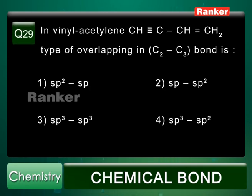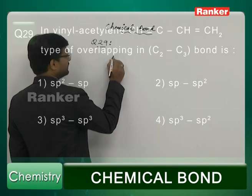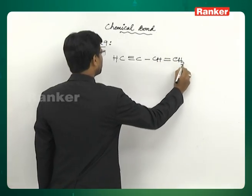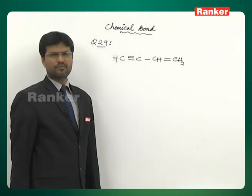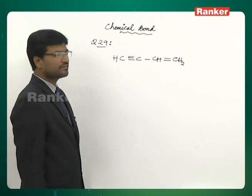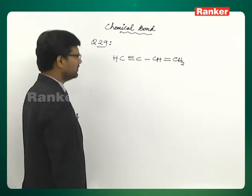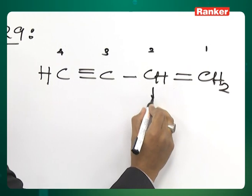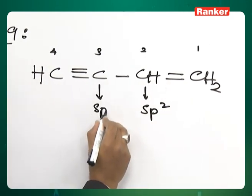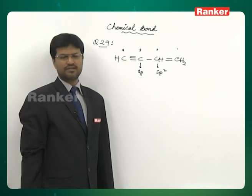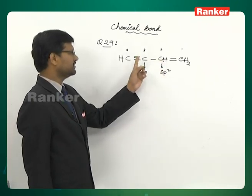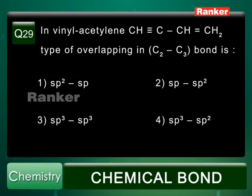In vinyl acetylene, the type of overlapping in the C2–C3 bond: vinyl acetylene is H–C≡C–CH=CH2. By IUPAC numbering from the double bond side, C2 is sp2 hybridized and C3 is sp hybridized. So the C2–C3 overlap is sigma sp2 to sp — that is, the sp2 orbital of the second carbon and the sp orbital of the third carbon. Answer is first option.